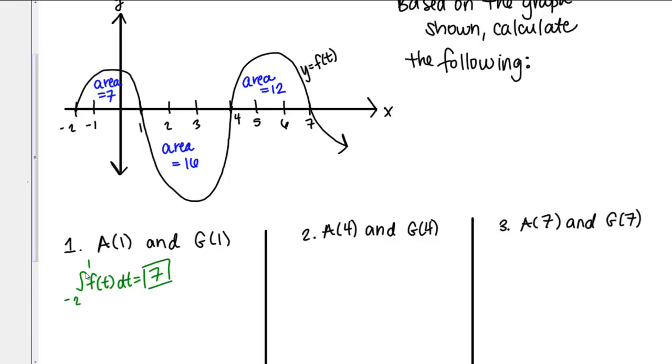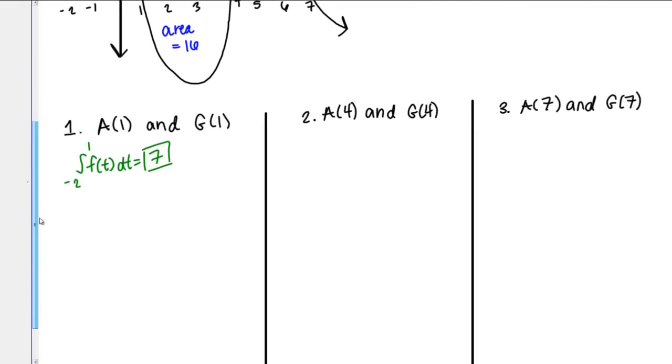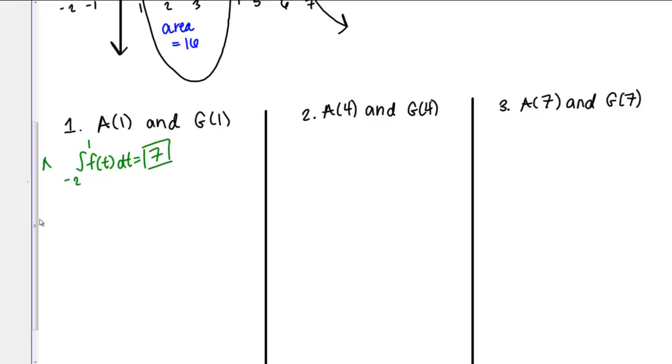That's my answer, 7. That was A of 1. We want to do the same thing for G of 1.